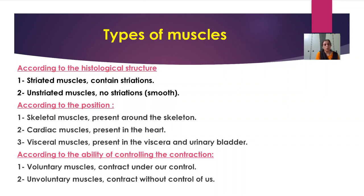According to the position of muscles, they are divided into three types: skeletal muscles, present around the skeleton; cardiac muscles, present in the heart region; and visceral muscles, present in the viscera and urinary bladder. According to the ability to control contraction and relaxation, muscles are of two types: voluntary muscles, which contract under the animal's nervous system, and involuntary muscles, which contract without conscious control.